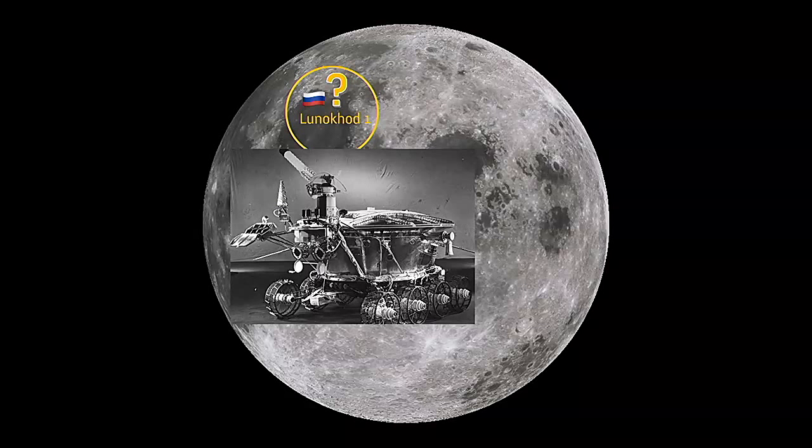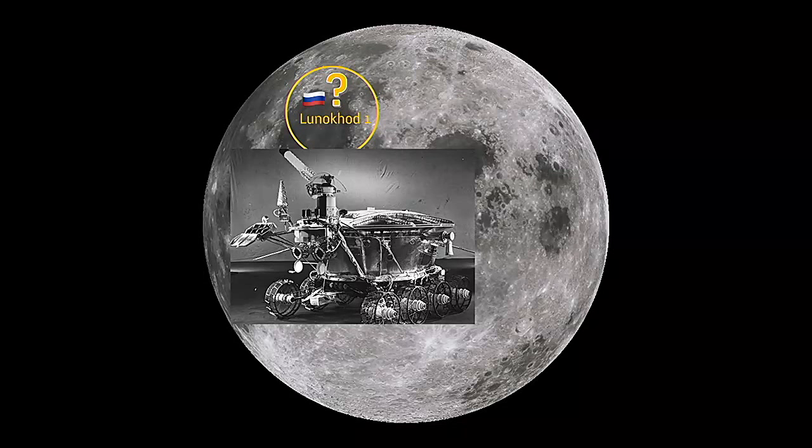Lunokhod 1 is a fascinating story. This is it. It is a suitcase of mirrors on the back of a rover. It drove around the lunar surface for about six months covering tens of kilometres which is pretty impressive compared to the other rovers that have been to the moon. And then we lost it. It had a premature shutdown and it was missing for about 40 years.